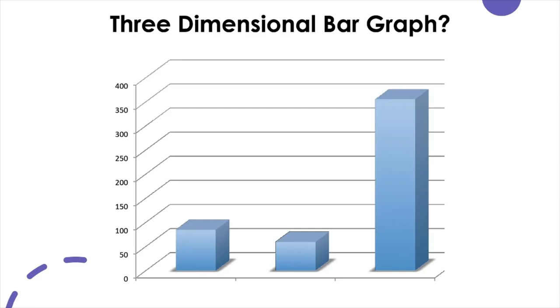People sometimes like to add extra features to graphs just because they can and think it looks cool and fancy. For example, you have probably seen three-dimensional bar graphs before. Usually, this representation is not as effective as its two-dimensional counterpart, because the extra added dimension does not convey any additional information and sometimes may confuse more than help. As a general rule, you want to minimize any unnecessary bells and whistles in any visualization.